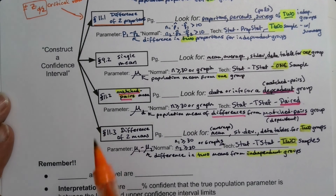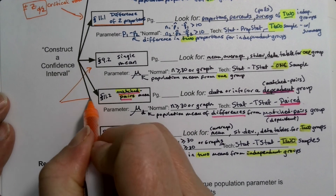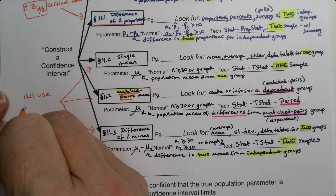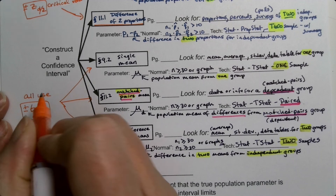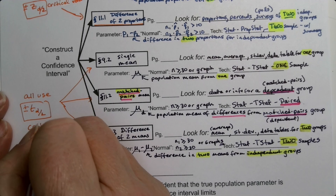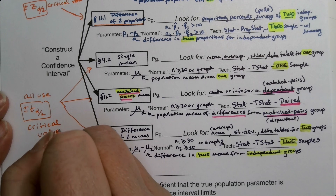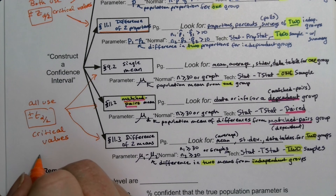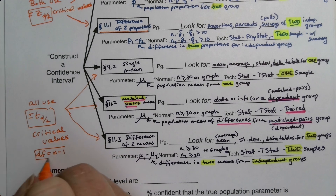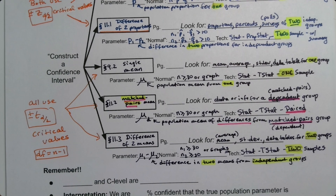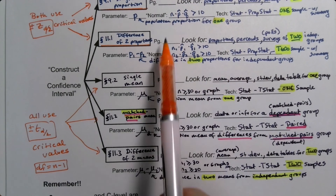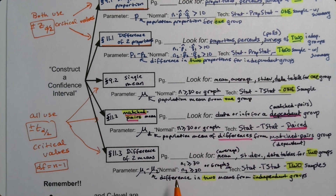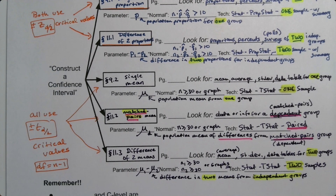One last thing: these three mean intervals all use T alpha over 2 as their critical values — they use the T curve, not the Z curve. Remember that degrees of freedom is N minus 1 for the T curve. Make sure to write in your page numbers so you know where to go in your exam notes packet. This flowchart is a quick reference to get you to the right place for each problem.